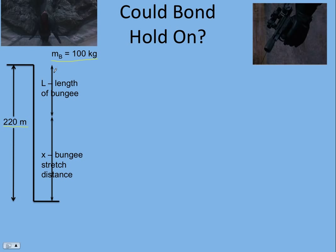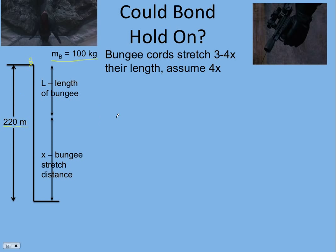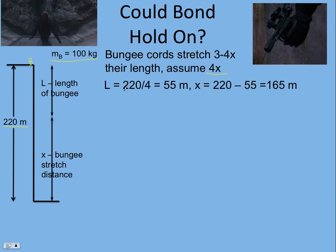The question is how much of that 220 meters is the length of the bungee, and how much is the stretch distance. Bond starts off at the top. Bungee cords typically stretch three to four times their length — we want a very stretchy bungee cord to minimize the force on Bond, so we'll assume four times the length. Dividing the total distance by four, the bungee itself is 55 meters long.